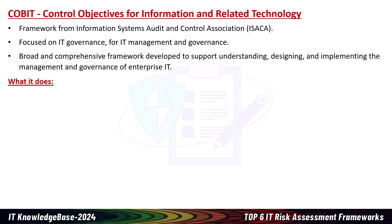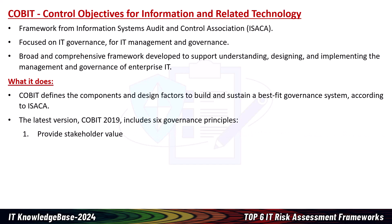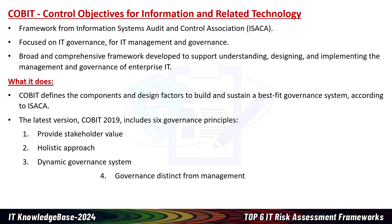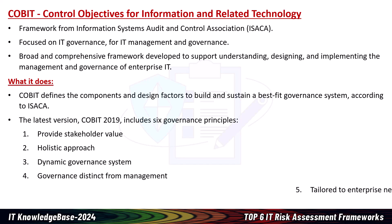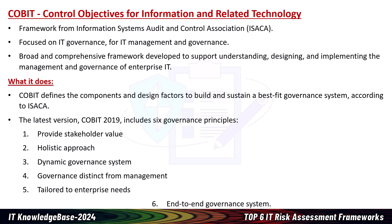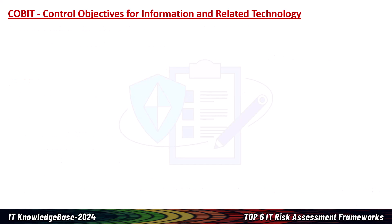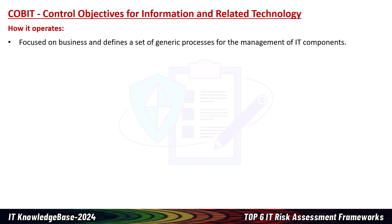COBIT defines the components and design factors to build and sustain a best-fit governance system. According to ISACA, the latest version of COBIT is 2019, which includes six governance principles: provide stakeholder value, holistic approach, dynamic governance system, governance distinct from management, tailored to enterprise needs, and end-to-end governance system.